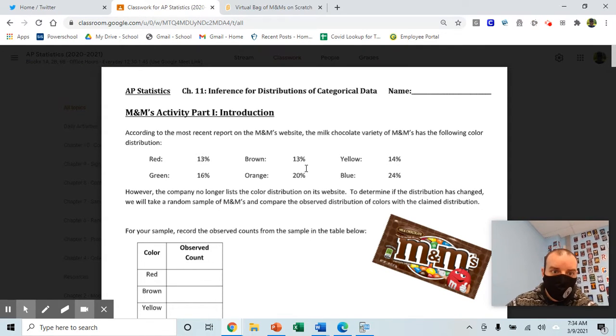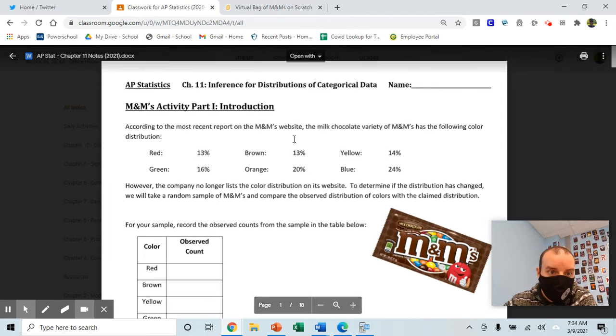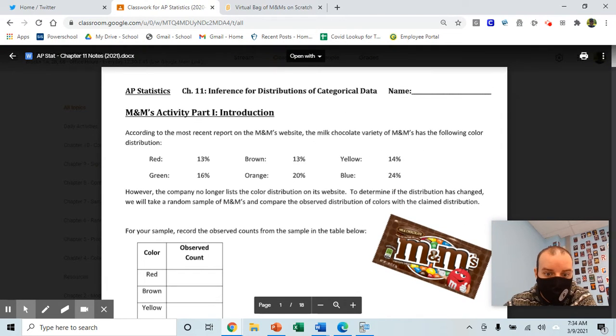You'll be starting chapter 11 with an activity related to M&Ms and chi-square distributions. So this is what you'll be doing today.